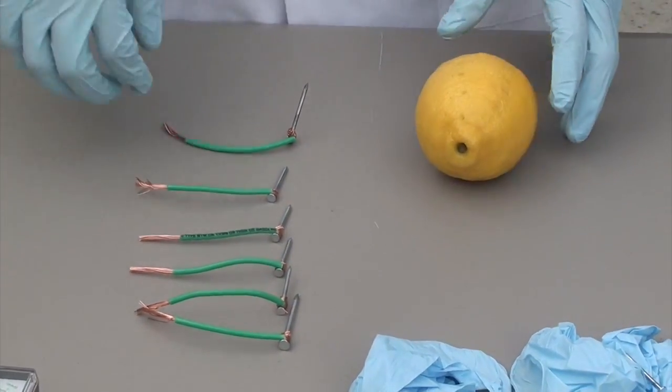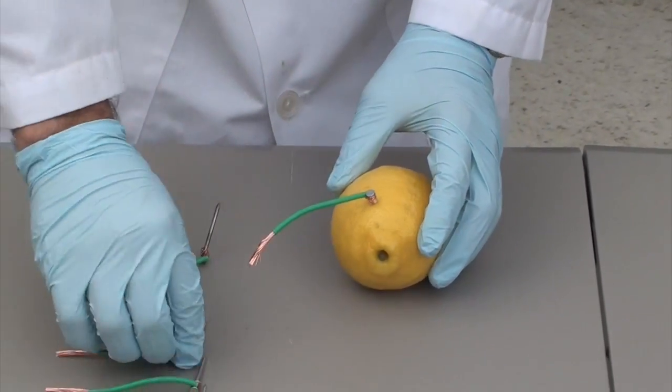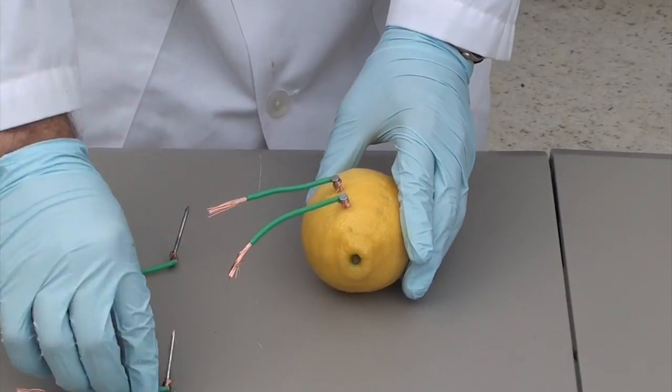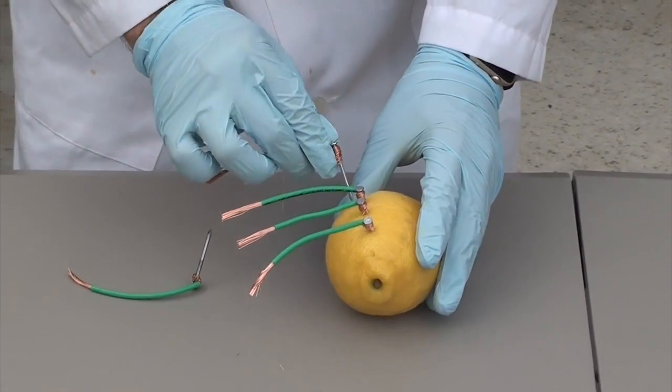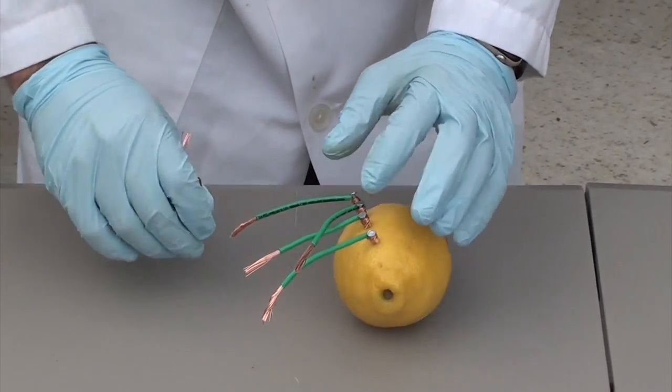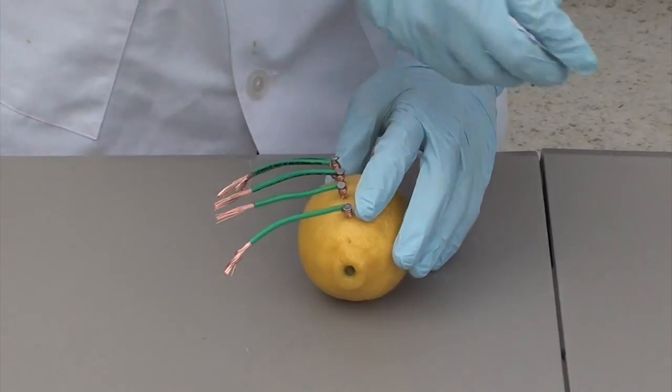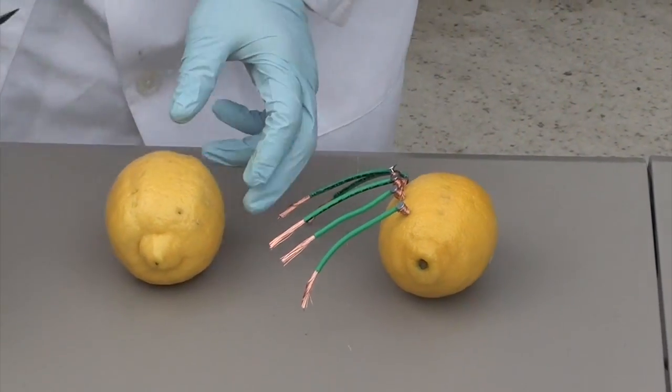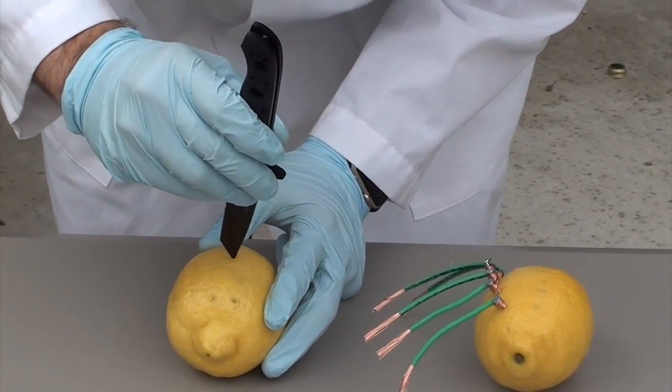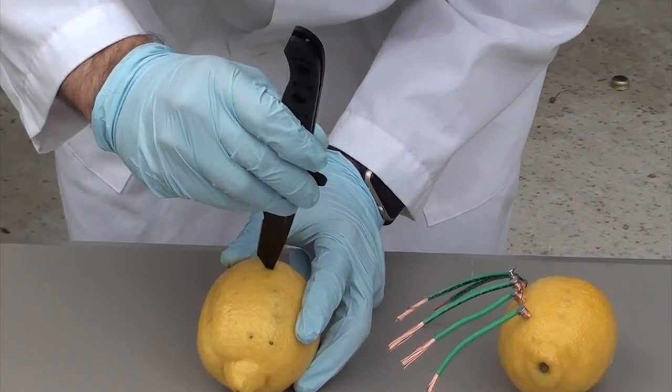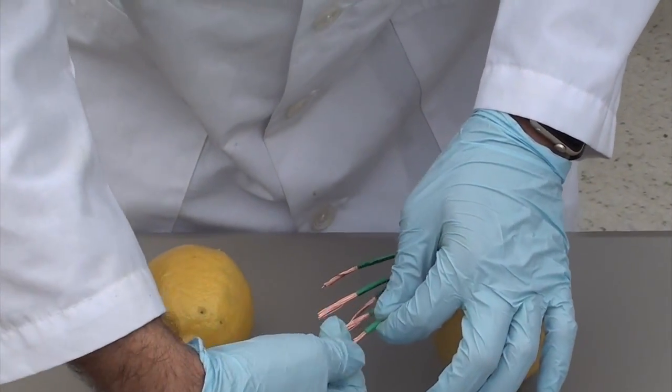We are going to grab our lemon and nail side, we are going to puncture into the lemon, and we are going to get another lemon and puncture six different holes. Now the copper wire is going to go straight into the other lemon.